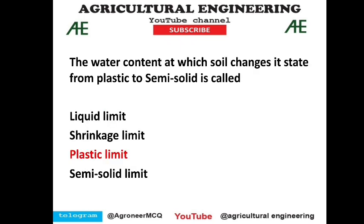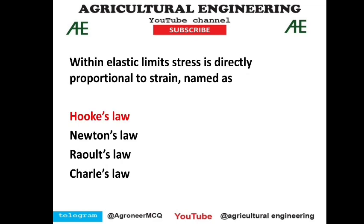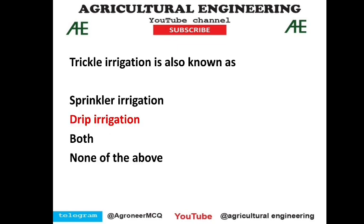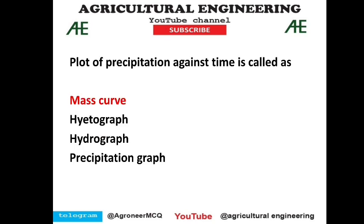The water content at which soil changes its state from plastic to semi-solid is called the plastic limit — option C is correct. Within the elastic limit, stress is directly proportional to strain — this is Hooke's law, option 1 is correct. Trickle irrigation is also called drip irrigation — a very simple question.